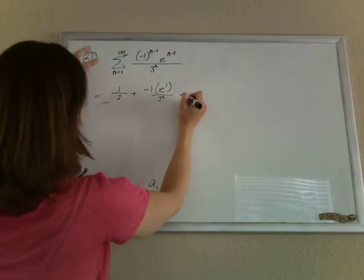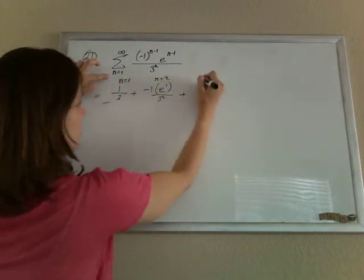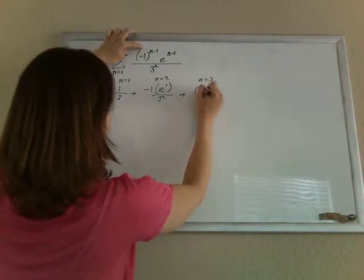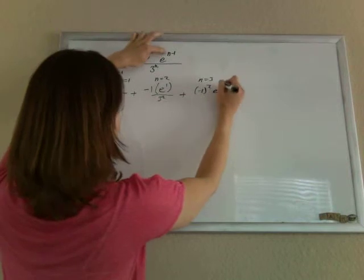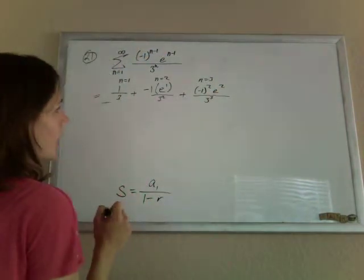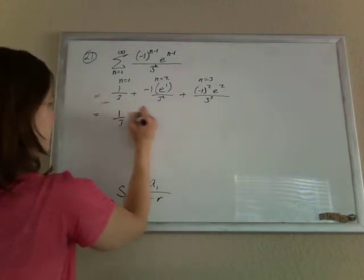Let's do it again. Plugging in 3. So this was plugging in n equals 1, plugging in n equals 2, now we're plugging in n is 3. So we'll have negative 1 squared, e to the 2, 3 cubed. And we could keep going, but if we start to clean it up,